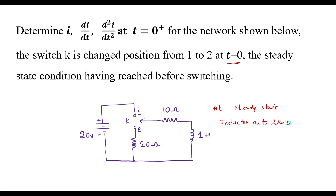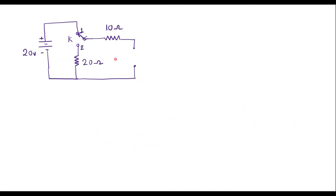The inductor acts like a short circuit. Let me redraw the circuit such that the switch is connected to position 1 and the inductor acts like a short circuit. Here, where there was an inductor, it acts like a short circuit. We can observe that the 20 ohm resistor is connected to position 2. As this is open, no current flows through the 20 ohm resistor.